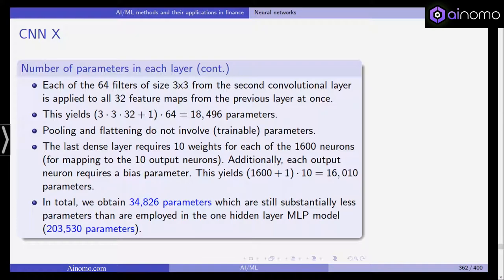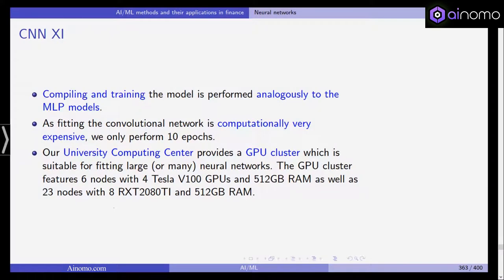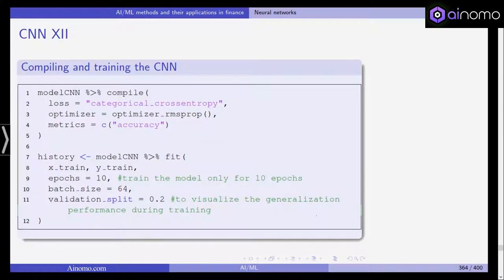The model has far fewer parameters but, as we'll see, doesn't lose much flexibility. Compiling and training is done in analogy to the multi-layer perceptron, but it is computationally very expensive — so we only perform 10 epochs instead of 50. This was run on a university computer center using GPU clusters, specifically 4 nodes with 4 Tesla V100 GPUs. We compile the model with cross-entropy loss and accuracy as metric, fitting with X-train, Y-train, 10 epochs, batch size 64, and 20% validation set.